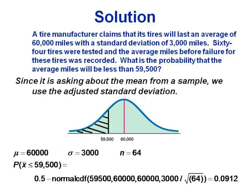Draw the picture, put the mean 60,000 in the middle, and locate 59,500 on the left. We want the probability of being less than that, shading to the left — less than half. So we compute 0.5 minus normalCDF for the piece between 59,500 and 60,000, with mean 60,000 and standard deviation 3,000 divided by the square root of 64. That gives 0.0912 — a 9.12% chance this group of 64 tires averages less than 59,500 miles.